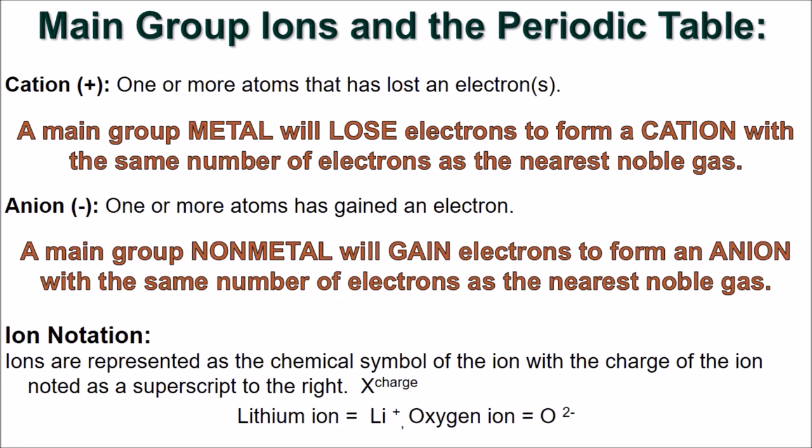We have already talked about an element being defined by its protons, and that isotopes of an element have a varying number of neutrons. But what about electrons? It turns out, atoms can lose or gain electrons. The general term for one or more atoms that has lost or gained an electron is an ion.